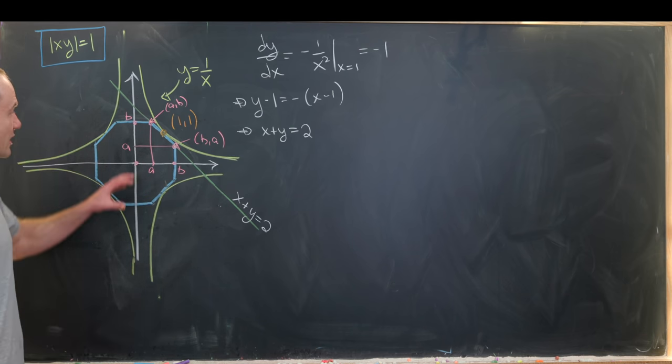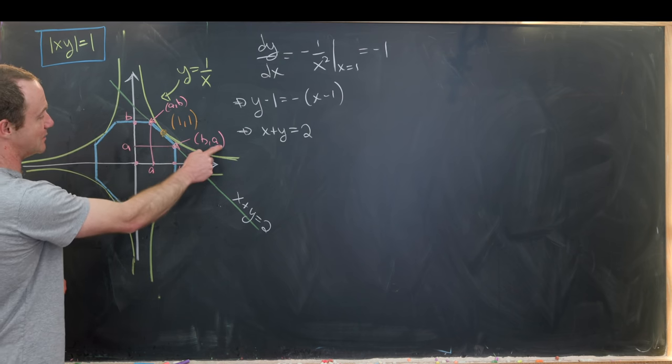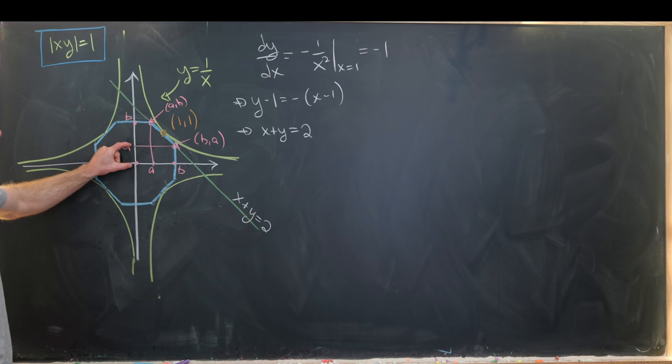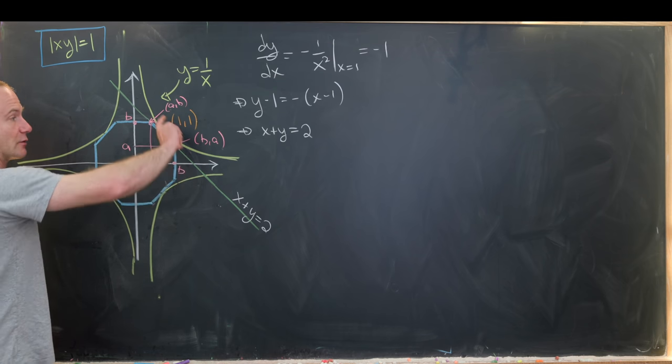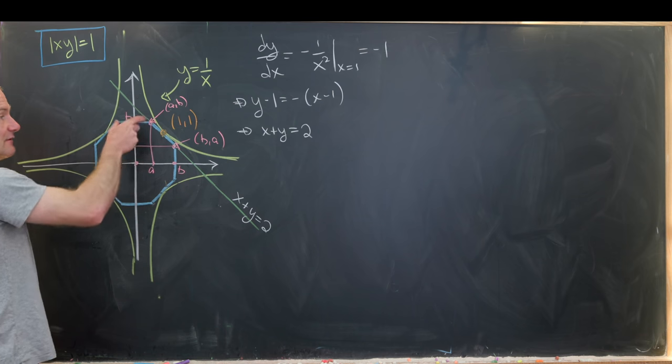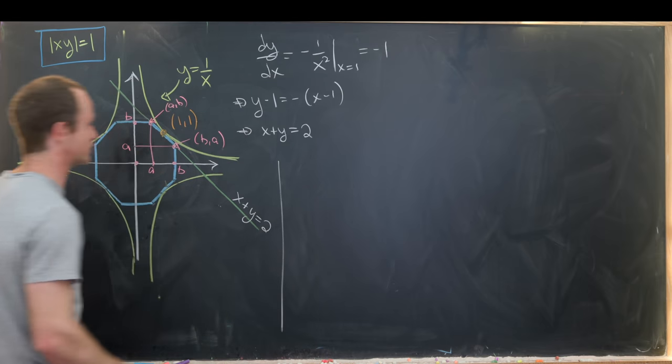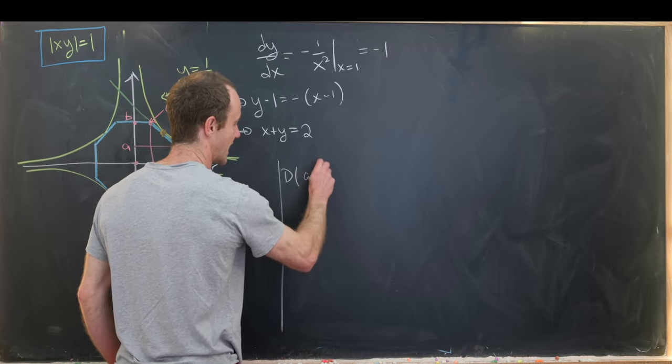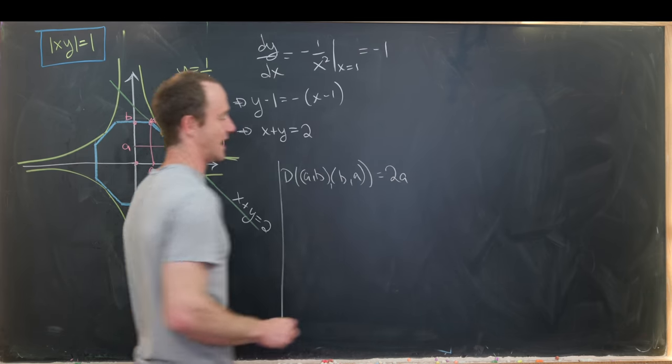Now since this is a regular octagon we need the distance between ab and ba to be exactly double the length of a. And that's because 2a is the length of this side right here. And we want all of these sides to have the same length. Okay so now let's impose that condition over here.